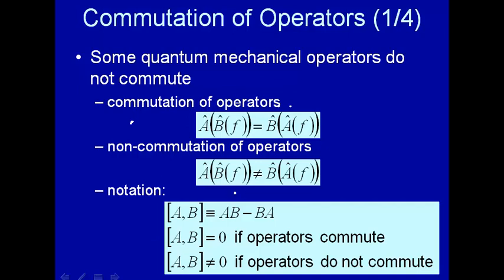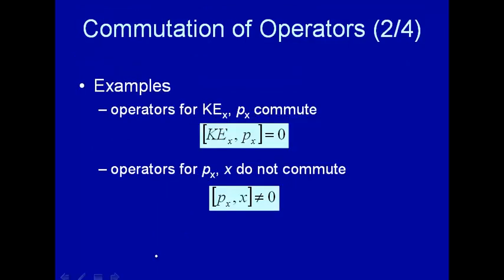If, on the other hand, this does make a difference, and you get a different function, when you subtract the two results you will not get zero, and you say the operators do not commute. We'll see in a minute why this is important. But let's take some examples first. Let's look at the operators for kinetic energy and for momentum in the x direction — we'll show that these operators commute.